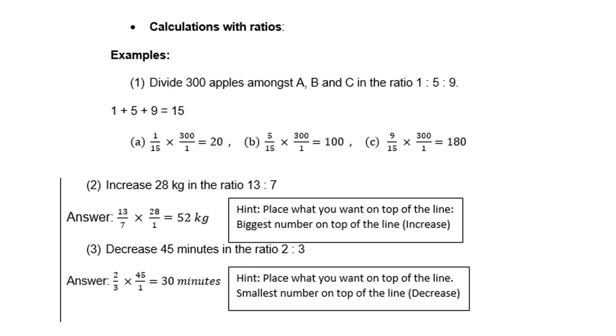Example number 2: Increase 28 kilograms in the ratio 13 is to 7. So if you increase, place what you want on top of the line. Biggest number on top because we want to increase. If you want to decrease, we put the smallest number on top. So 13 over 7 times 28 gives you 52. If you decrease, then it must be 2 thirds times 45 minutes, which gives you 30.